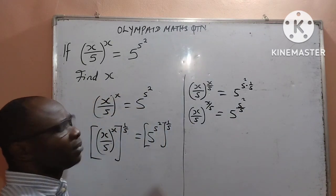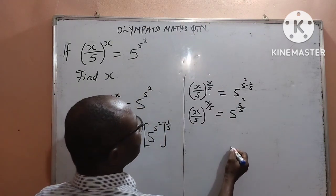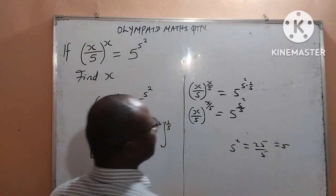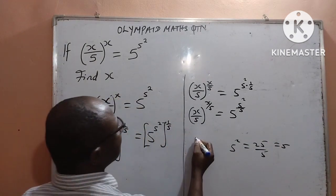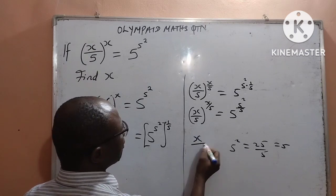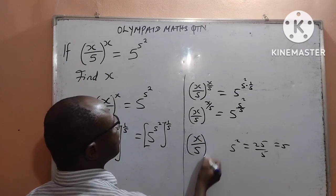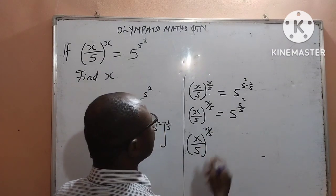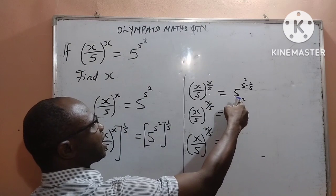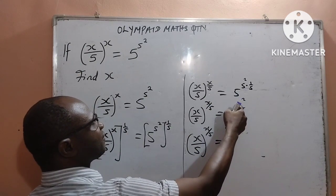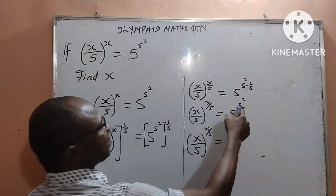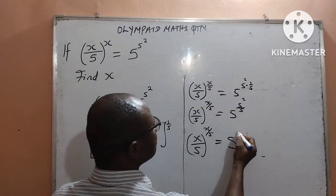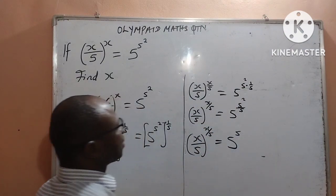Beautiful. But then, 5 to the power of 5 — that implies I will now have (x/5)^(x/5) equal to... I have now worked on the power of 5 to the power of 5. That will give me 5 as the base, then to the power of 5.